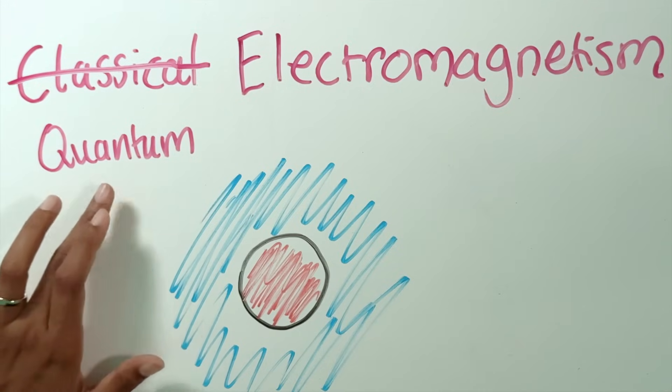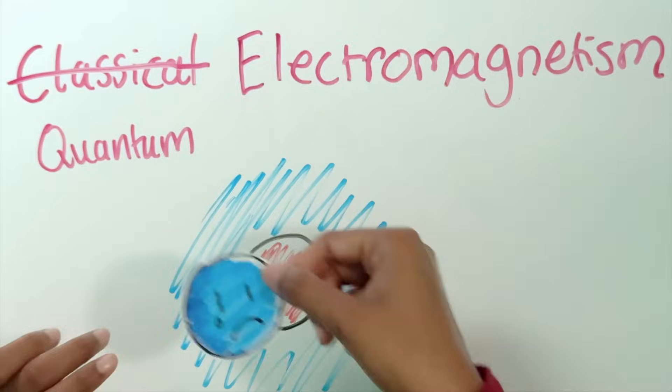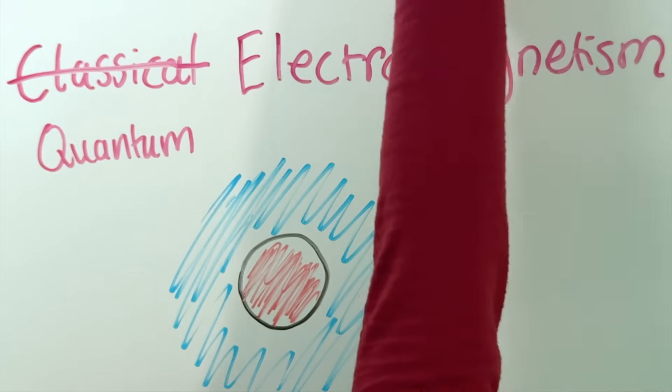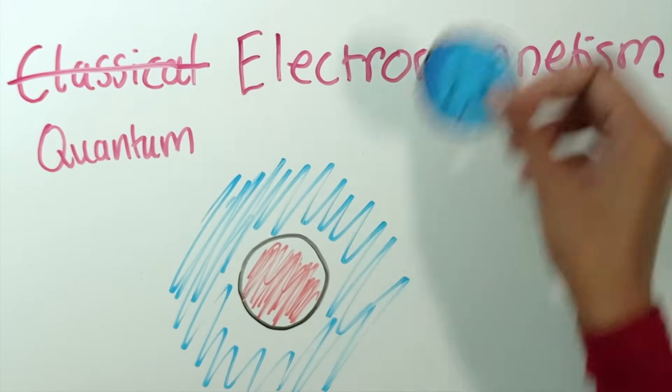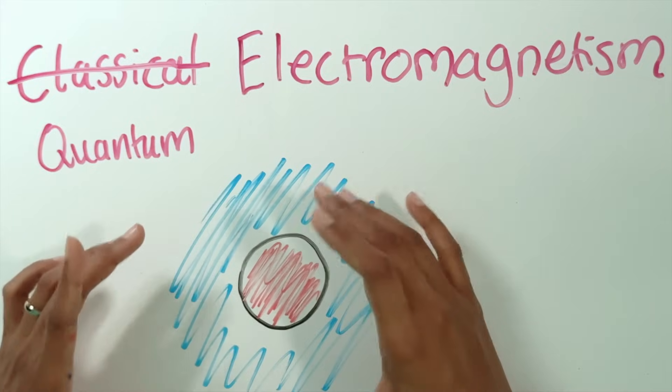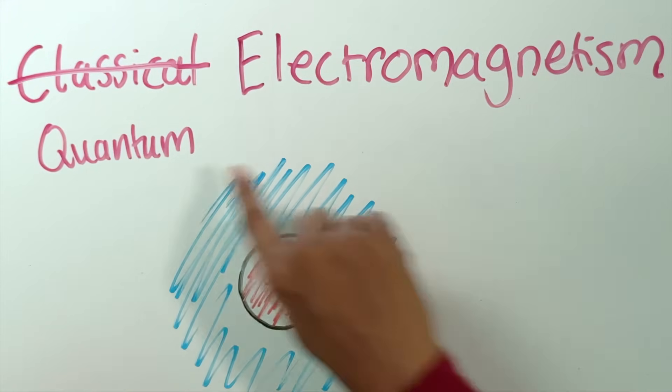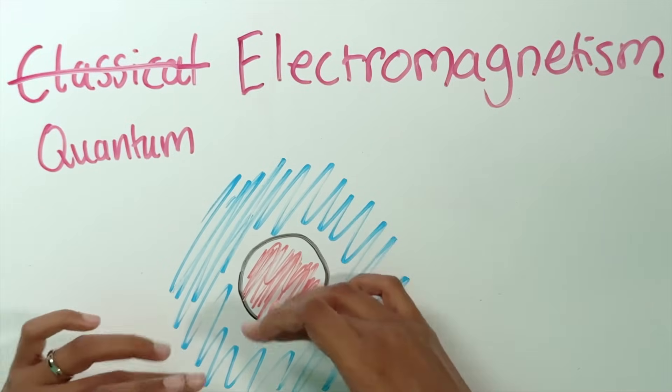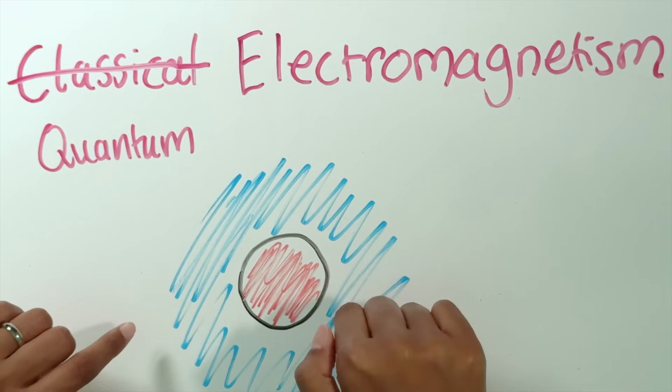In quantum mechanics, electrons are not described as point particles. They're actually more like waves — very similar to light waves, spread out in space. Even when they're inside an atom, instead of a single point particle rotating around the atom, you have this cloud of electron all around all the time. But even though it is this wave that's spread out, it still has this thing called angular momentum. So electrons around the atom do have angular momentum, and we would expect this electron to also produce a magnetic field, which is correct in quantum mechanics.